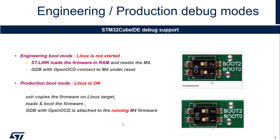In production mode we have to be careful — there is a difference from engineering mode. The Linux framework has already started the M4 firmware, so when GDB connects to the M4, the M4 is already running. The initialization phase of the M4 is already done. So if you want to debug the initialization phase of the M4 firmware, you need to put an endless loop that you release when you are in the debugging phase.